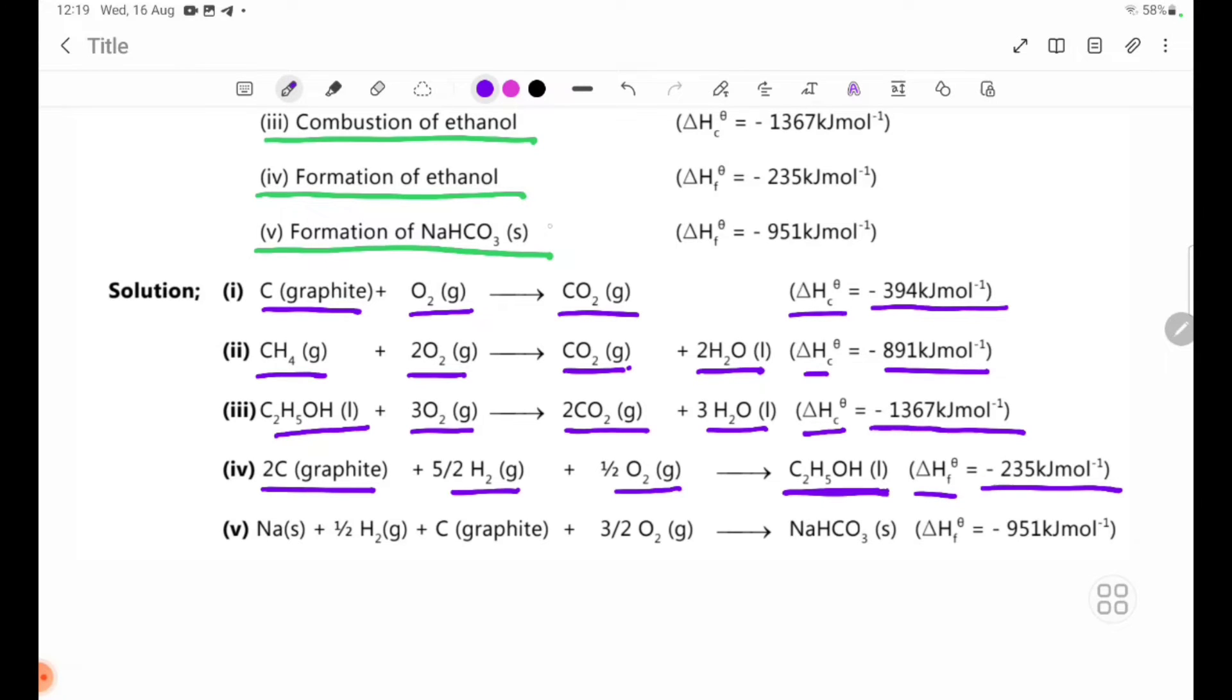Number 5: Formation of NaHCO3 solid. The product is NaHCO3 solid. The elements are sodium, hydrogen gas, carbon graphite, and oxygen gas. Delta H theta F equals minus 951 kilojoules per mole.